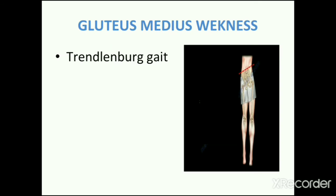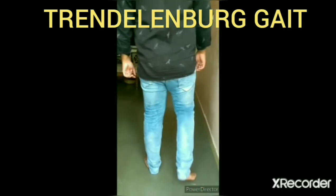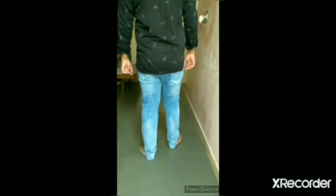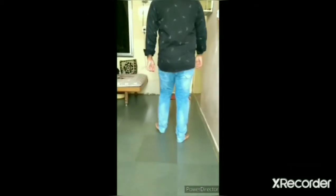The second gait is gluteus medius weakness gait. When the gluteus medius muscle or hip abductor muscle is weak, the trunk lurches laterally. The body leans to the opposite side during stance phase and the pelvis drops on the same side during swing phase.